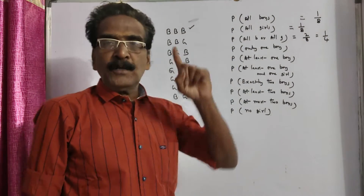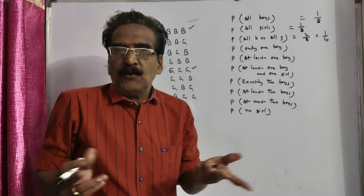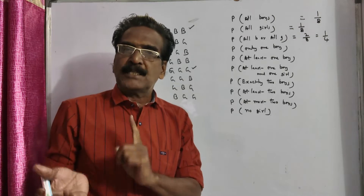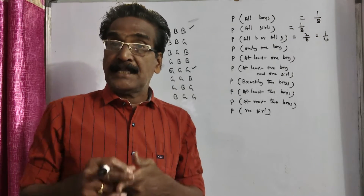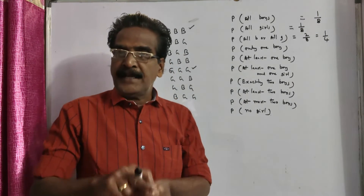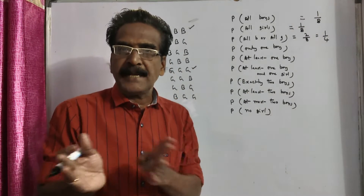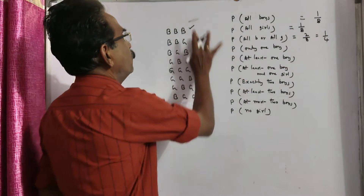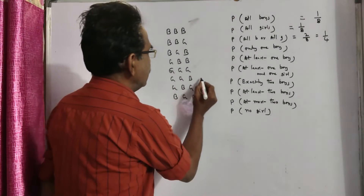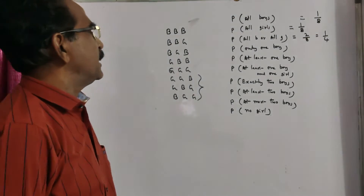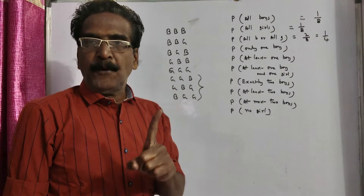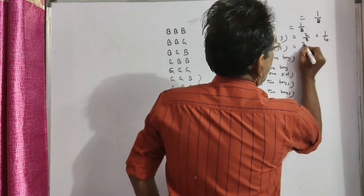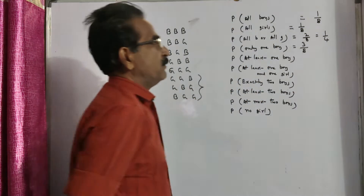Coming to only one boy — there must be exactly one boy and the other two must be girls. The question can also be asked as: probability of one boy and two girls. In how many outcomes do we have only one boy? In these three outcomes, we have only one boy. So favorable outcomes are three, total number of outcomes are eight.